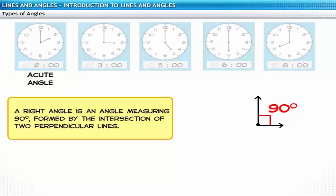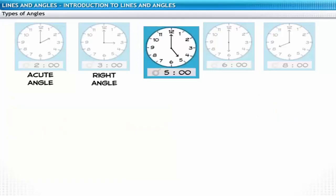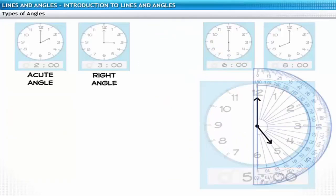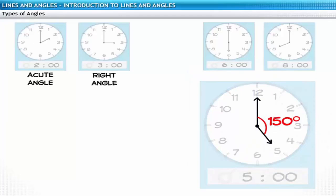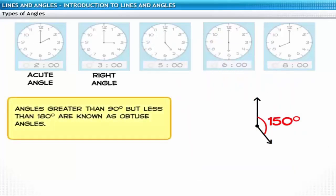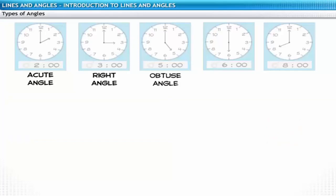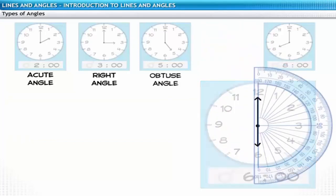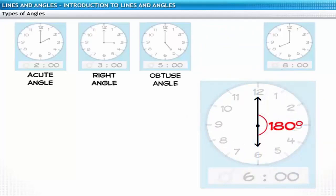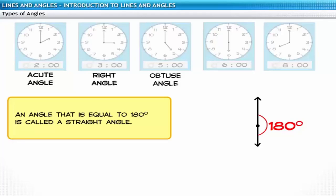It is formed by the intersection of two perpendicular lines. Similarly, at 5, the angle formed is 150 degrees. Angles greater than 90 degrees but less than 180 degrees are known as obtuse angles. Now, let's see what angle is formed at 6 o'clock. This angle is equal to 180 degrees. An angle that is equal to 180 degrees is called a straight angle.